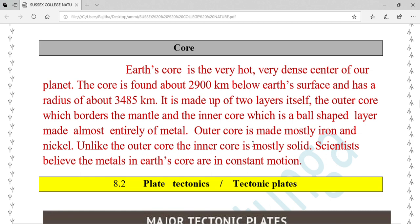The outer core is made mostly of iron and nickel. Unlike the outer core, the inner core is mostly solid. Scientists believe the metals in earth's core are in constant motion.